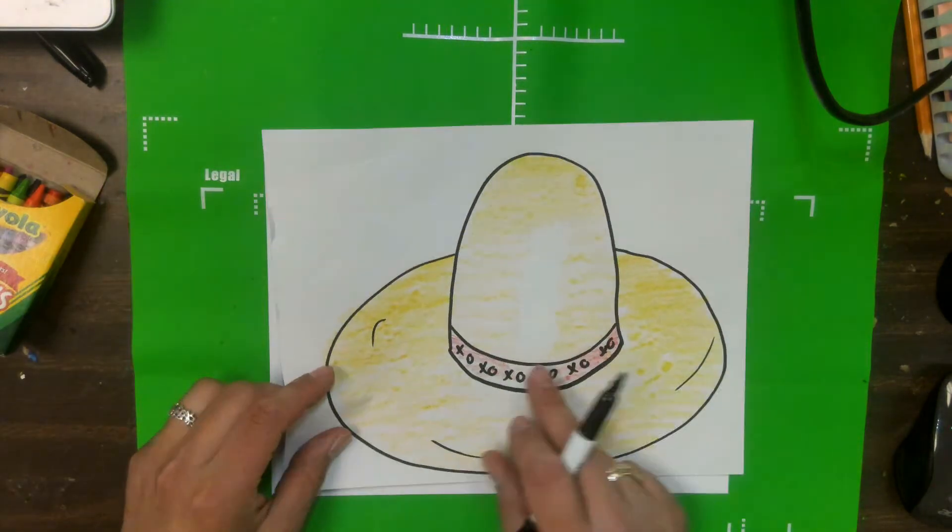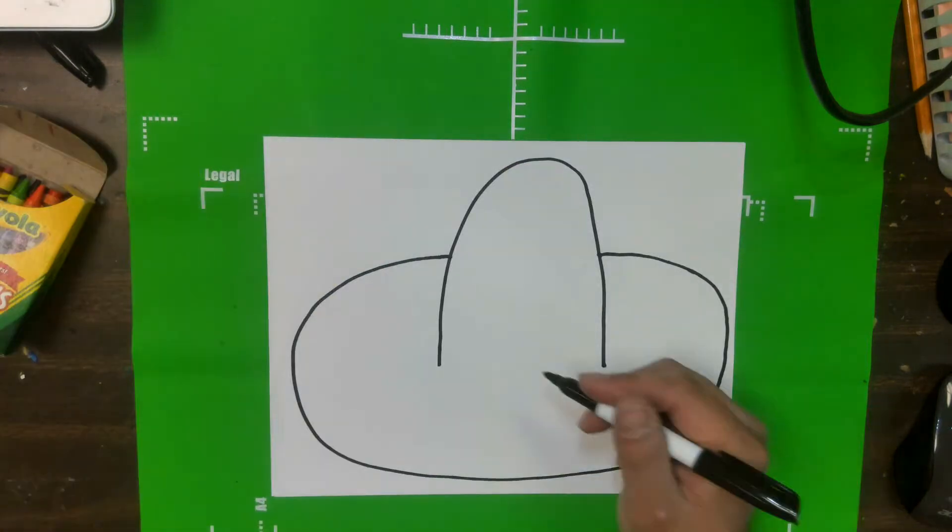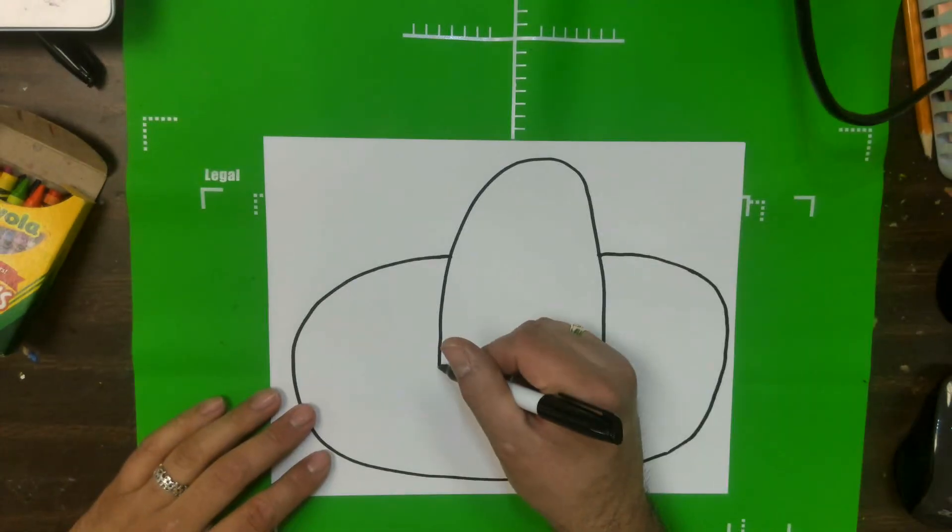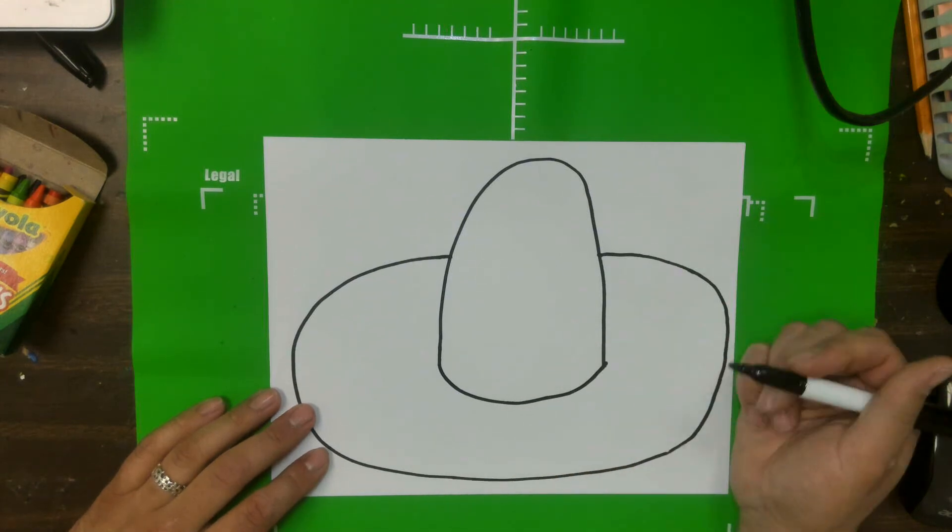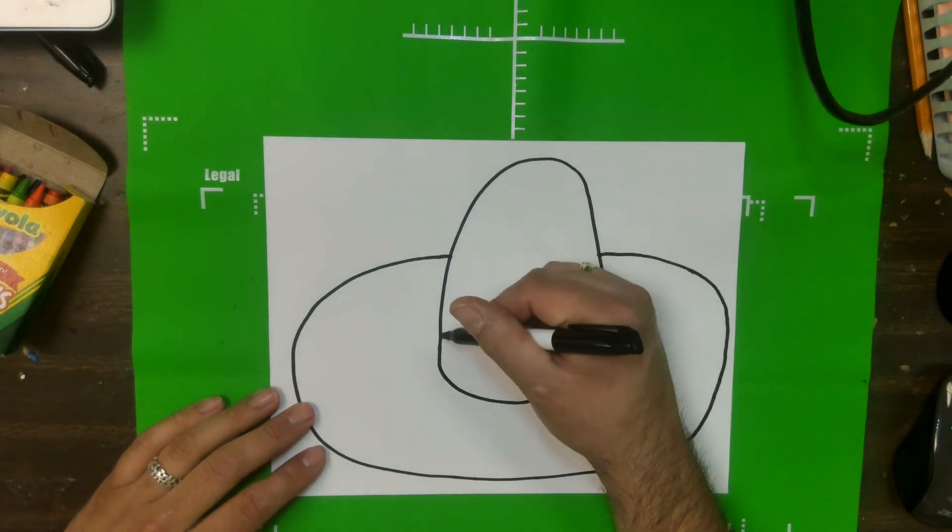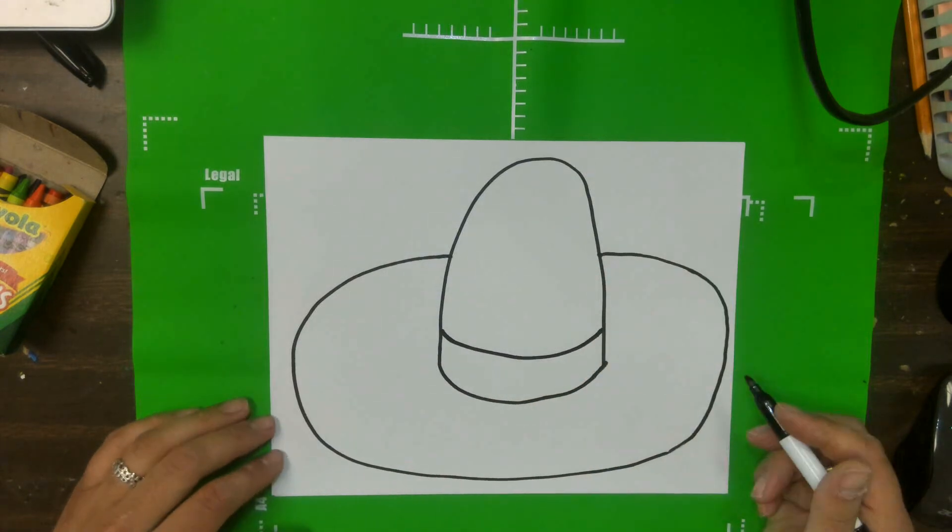This next part is really important, this line right here. This line, we want to make sure it's a curved line. So let's go ahead and try that. Curve it and then connect it. And then we're going to do that same line again, just a little higher like that.